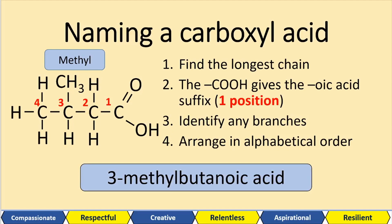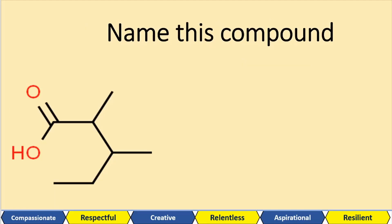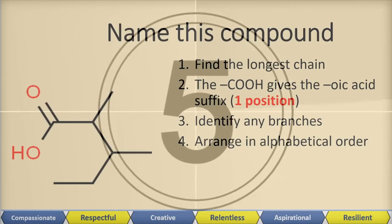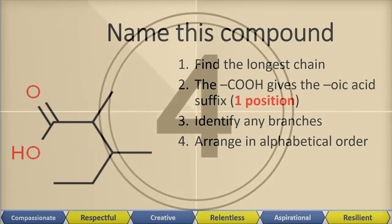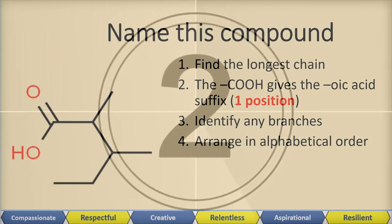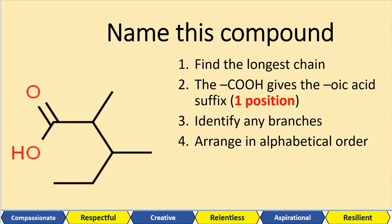When you get skeletal structures it can look a little crazy, so let's have a go at naming this molecule using the prompts on the right-hand side. First find the longest chain. Remember, your carbonyl carbon is position one. Going clockwise, the longest chain has five carbons. Now identify any branches.